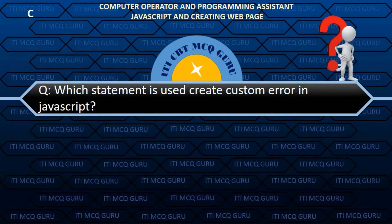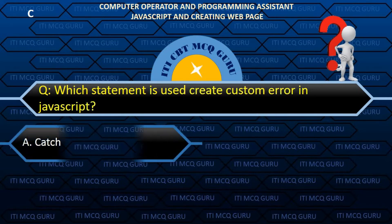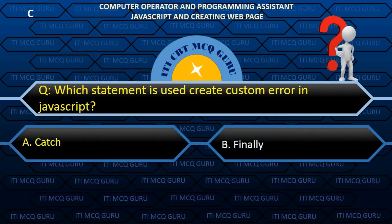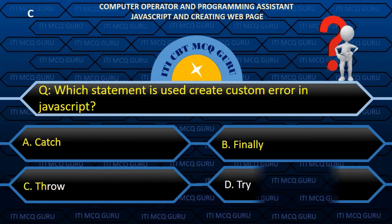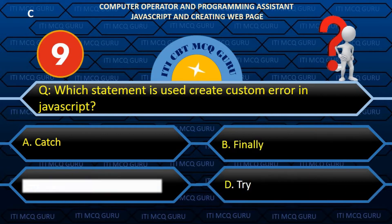Which statement is used to create a custom error in JavaScript? C. Default (Throw).